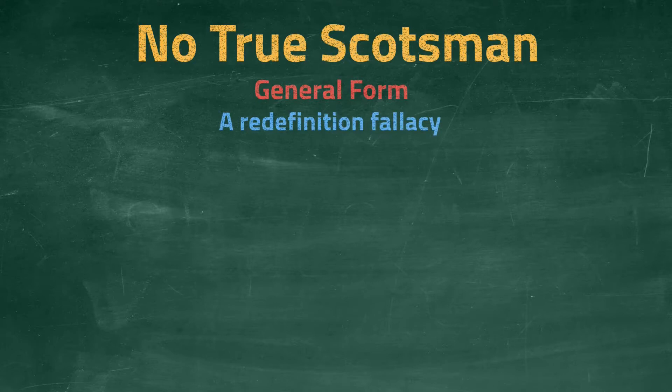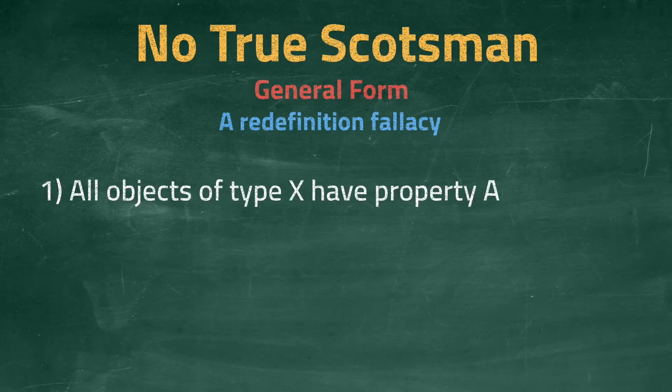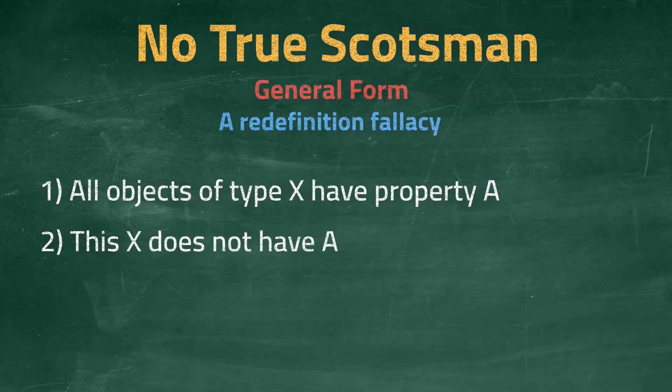So how does it work? Consider the following. All objects of type X have property A. This X does not have A. Another person has pointed out evidence that contradicts the previous statement.